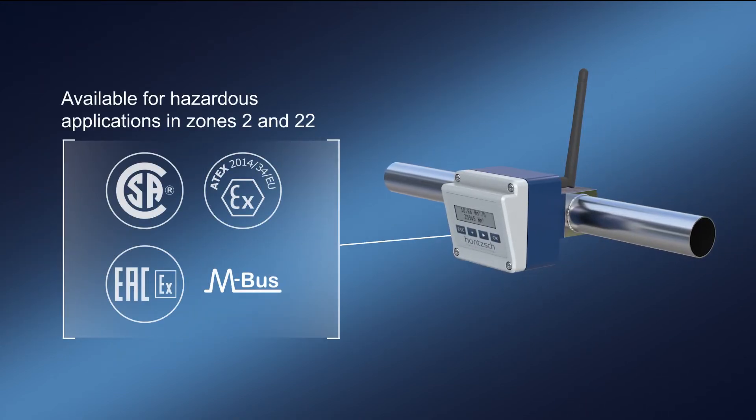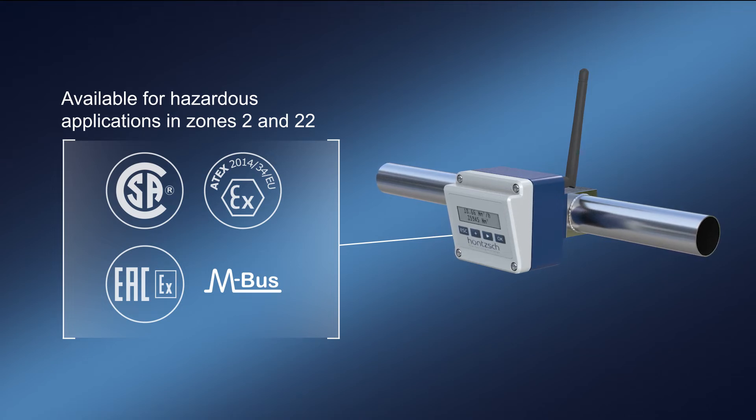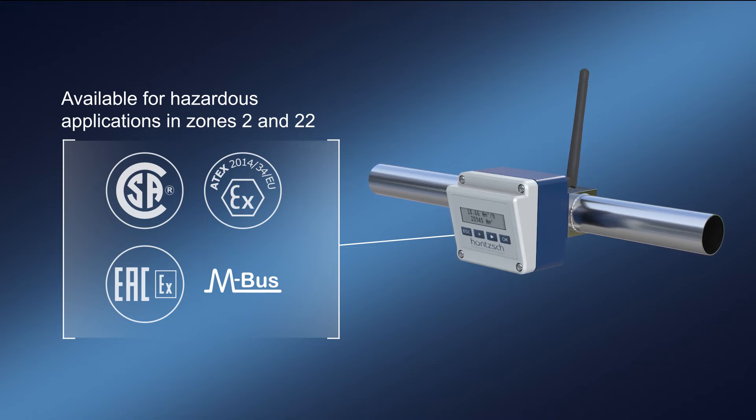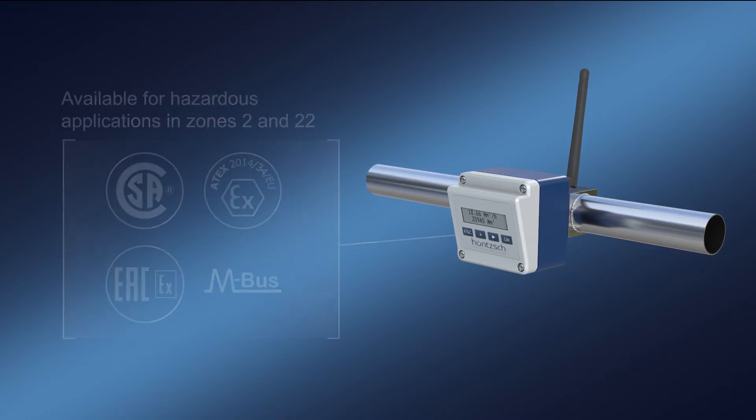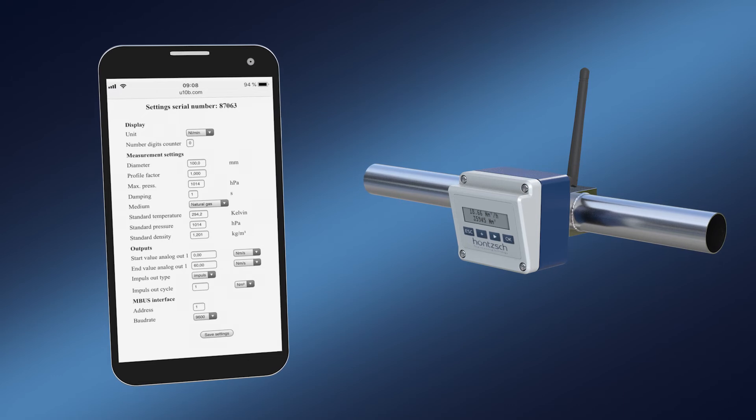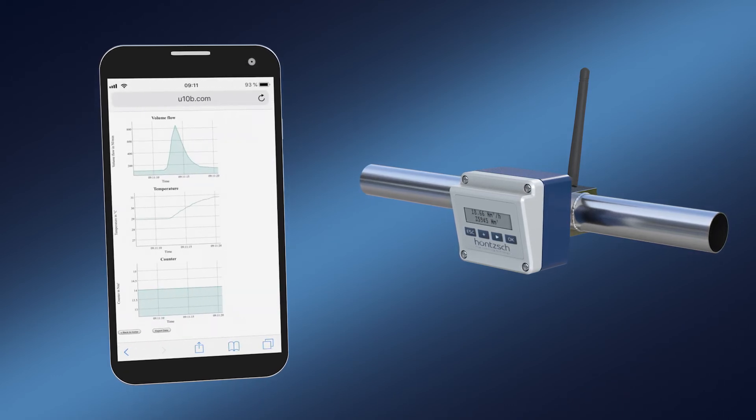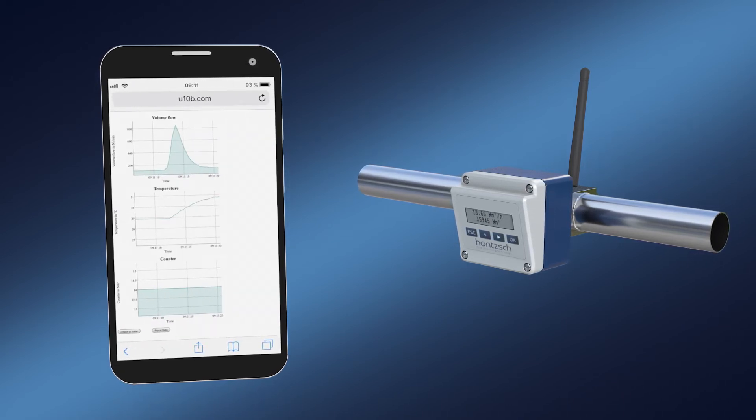Uncompromising in precision, versatile in application. For a wide range of applications, Hönsch develops different designs and transducers, up to real market specialties such as MBUS for hazardous applications in zones 2 and 22. Additionally, they can be connected via Wi-Fi and configured via an integrated web client.